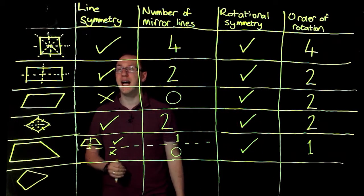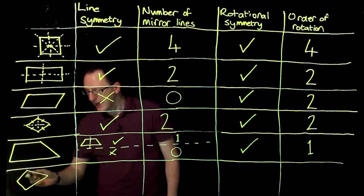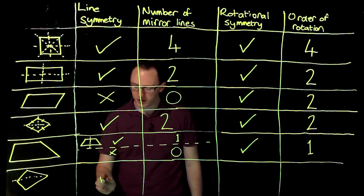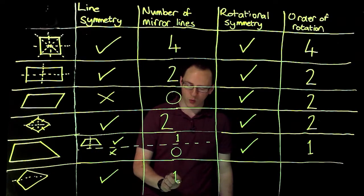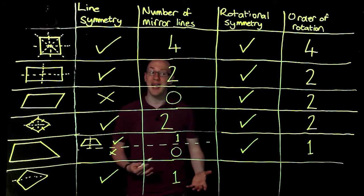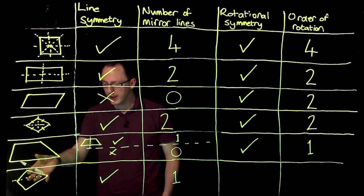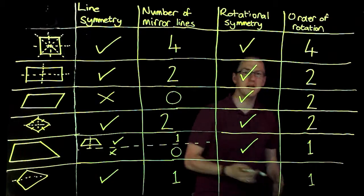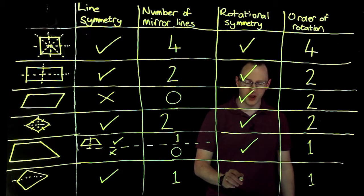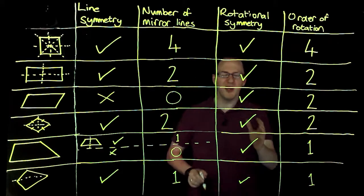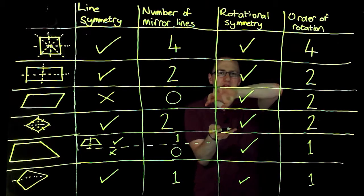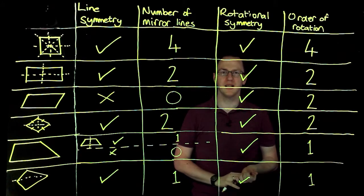Okay, and the last we have is a kite. Now, a kite has one mirror line down the middle. So it does have line symmetry and has it once. And again, we have rotational symmetry of order one. So it's rotational symmetry of order one. So all shapes do have rotational symmetry, but when they only have order one, that means they only fit when it's turned 360 degrees.